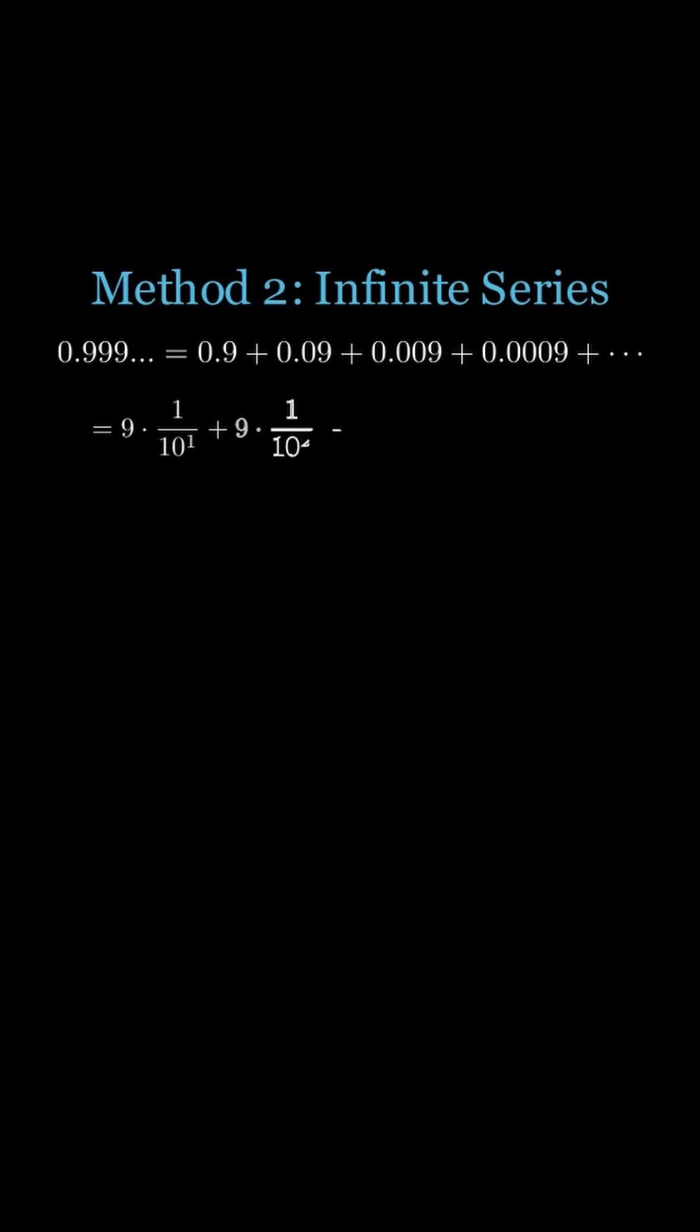We can rewrite each term using powers of 10. 0.9 is 9 times 1 over 10 to the first power, 0.09 is 9 times 1 over 10 squared, and so on.